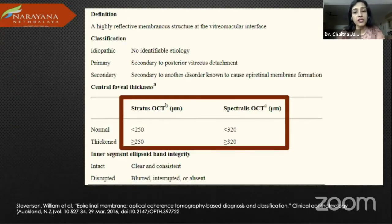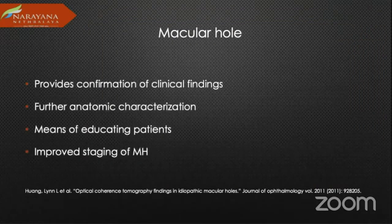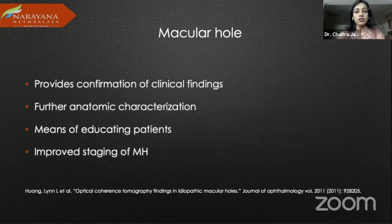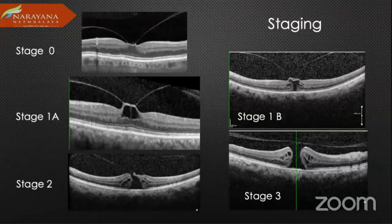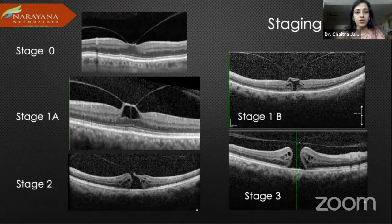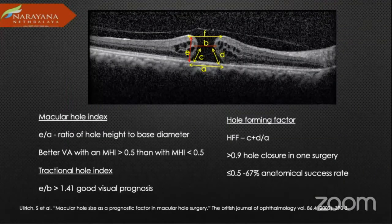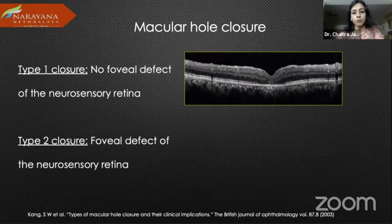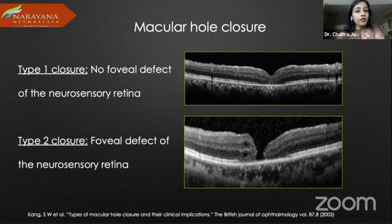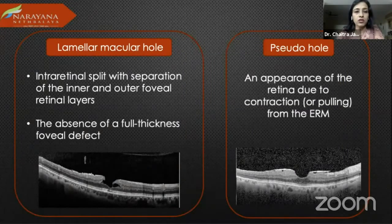Each device has a different cutoff for thickness, so it is very important to base your diagnosis of retinal thickening on which instrument you're using. Macular hole provides confirmation of clinical findings and anatomical characterization — very useful to educate patients, because when you show them a gap in the retina they understand why they're having metamorphopsia or a gap in their vision. Improved staging of macular hole is also possible using OCT-based classifications, helping with prognostication and surgical planning, including assessing hole closure post-surgery. OCT also helps differentiate lamellar macular hole from pseudohole, which can be difficult to distinguish clinically.